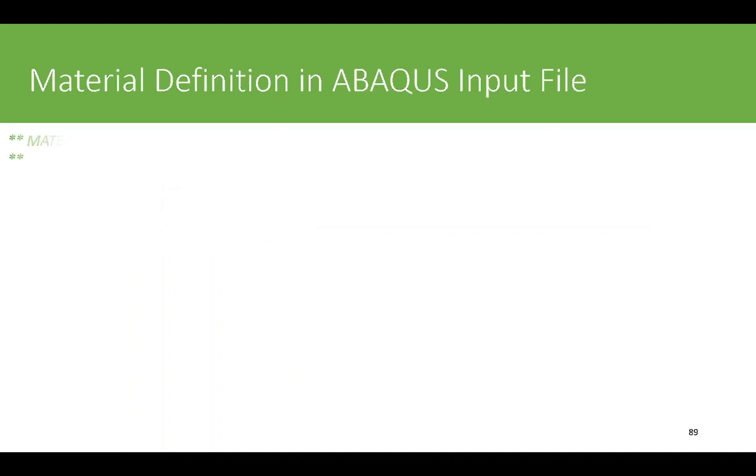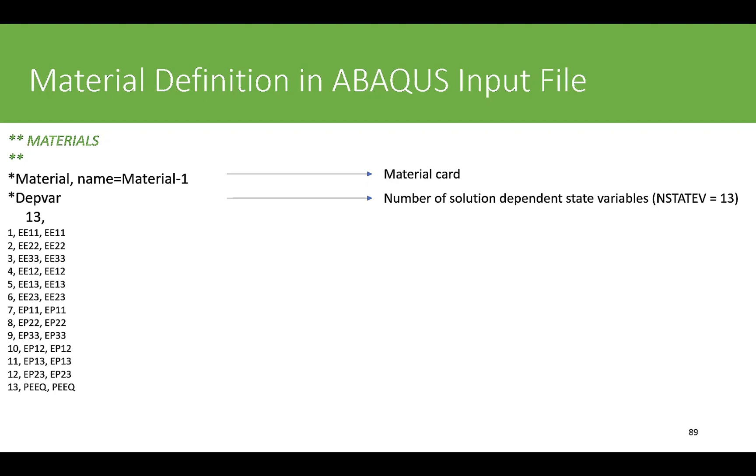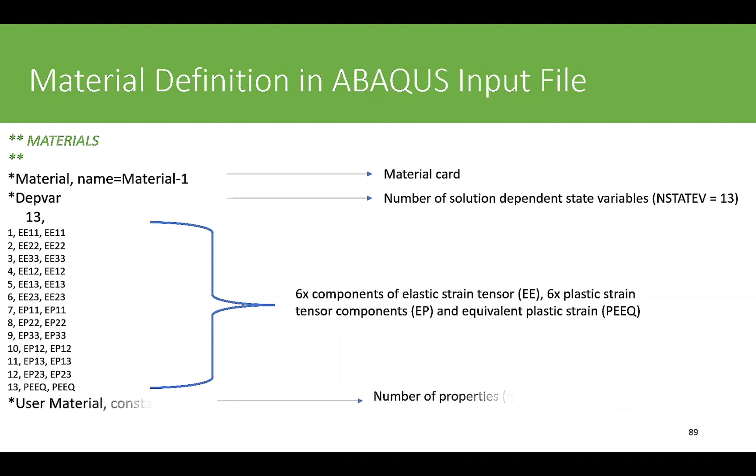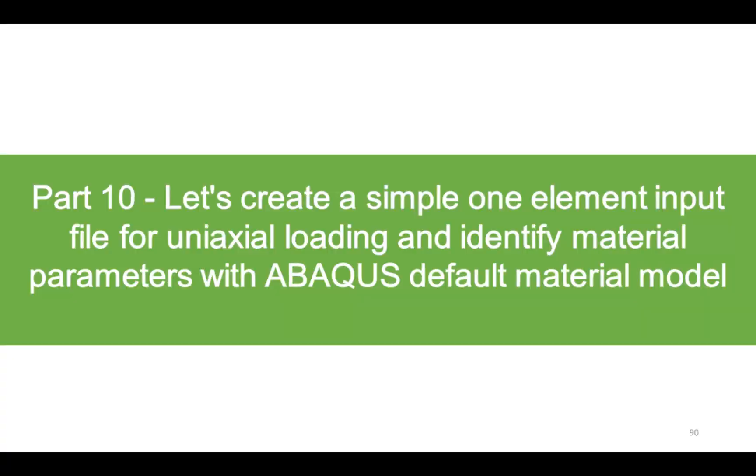The material definition in the ABAQUS input file is similar to the previous case. We have a material card with the number of solution dependent variables. In this case we have 13 state variables, and these are the variables as I assigned before. Material properties - now it's changed to 4, so the constants in the input file should be 4. The four constants are Young's modulus, Poisson's ratio, initial yield stress, and the hardening exponent N.